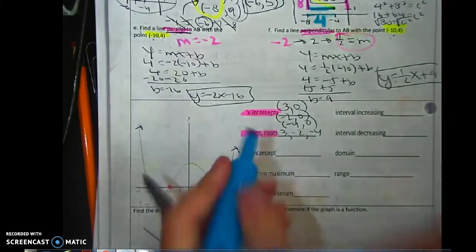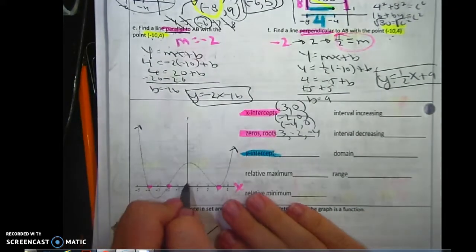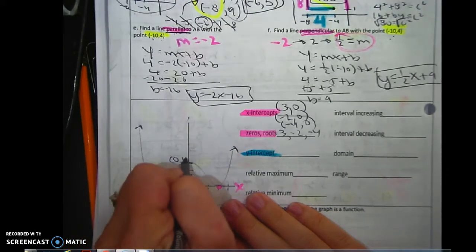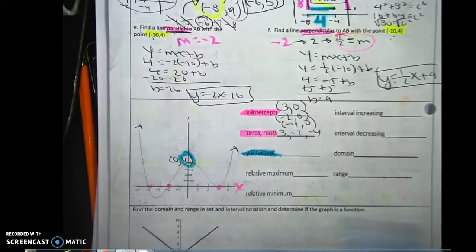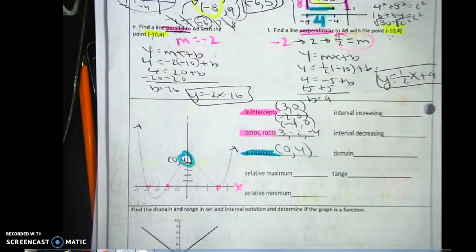For the y-intercept, this was just like the homework problem. I didn't put any lines, so we'll fake it. Let's say that's 4. We're faking it. It won't be like this on the test. So 0 comma 4, that's your y.